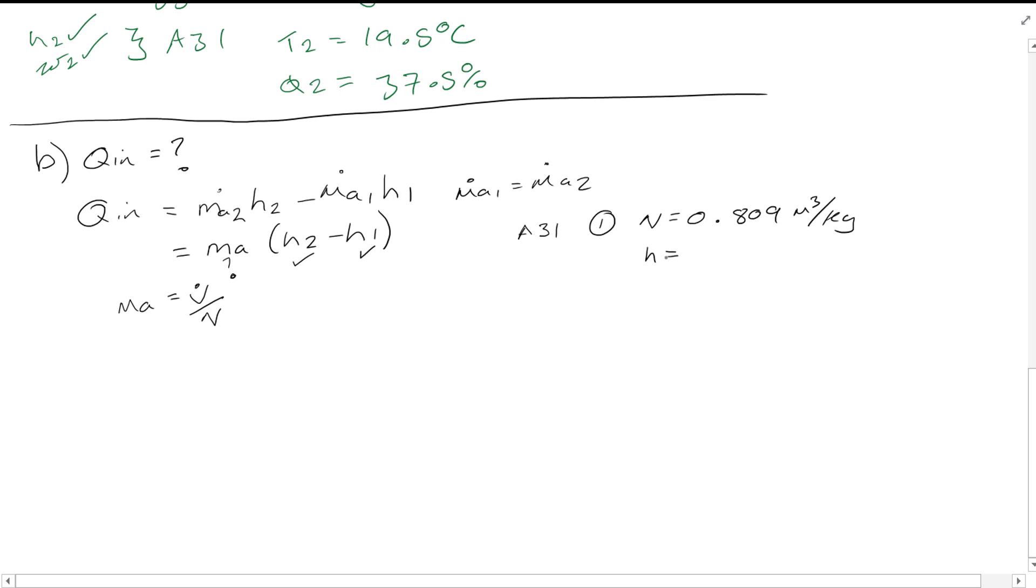And while we're here we'll also find H1 which is equal to 24 kJ per kg. And if we come back over here in order to find this, so 35 meters cubed per minute divided by 0.809 meters cubed per kg, and it leaves you with a value of 43.26 kg per minute.